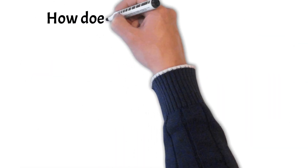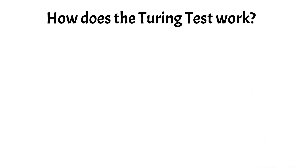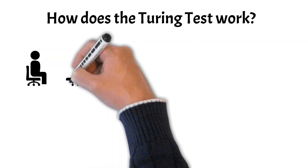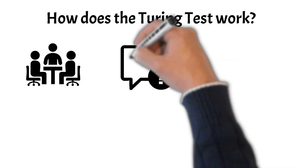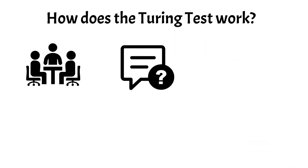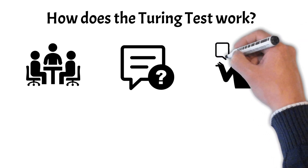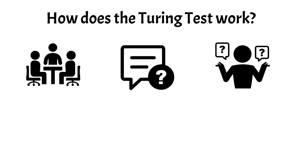Now let's analyze how the Turing test actually works. The Turing test involves a human judge engaging in a text-based conversation with both a human and a machine without knowing which is which. The judge asks a series of open-ended questions on various topics ranging from everyday matters to more complex subjects. The judge evaluates their answers based on qualities like coherence, relevance, contextual understanding, and human-like reasoning. The machine's responses are expected to demonstrate not just pre-programmed reactions but an ability to understand nuances, humor, and subtleties in the conversation.